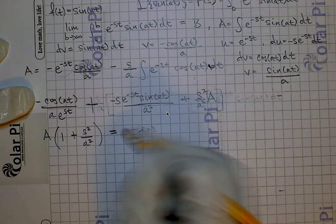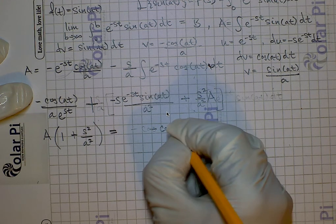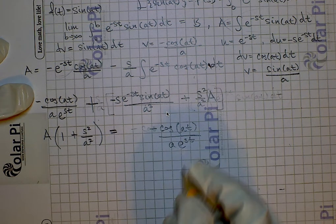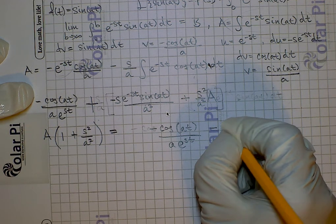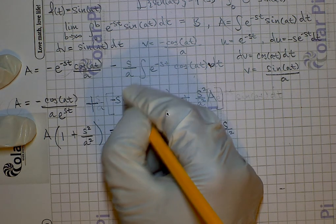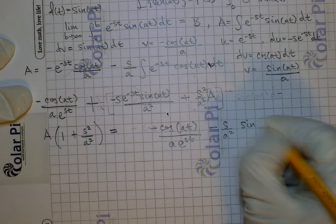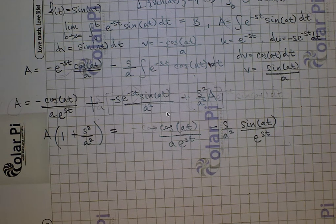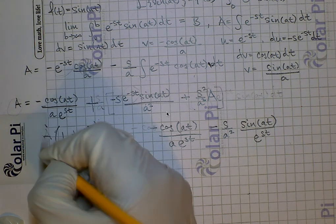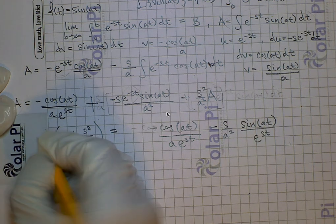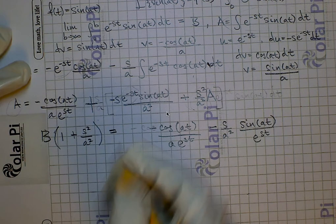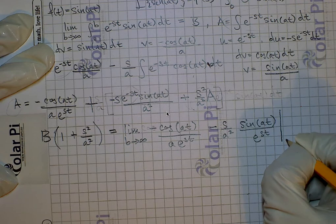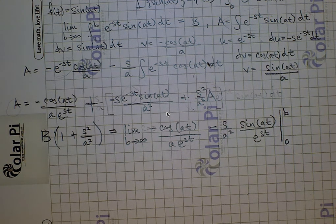The right side is only going to say negative cosine of at divided by a times e to the st, and then minus s over a squared times sine of at divided by e to the positive st. Now I can turn this capital A into capital B, so long as I write the limit as b goes to infinity on the right side and also evaluate at zero and at b.